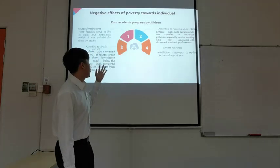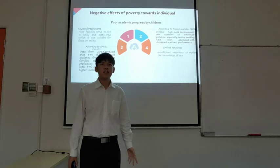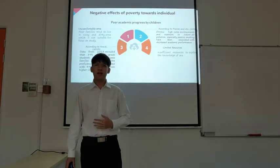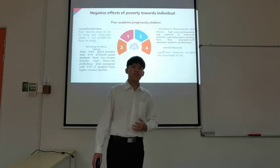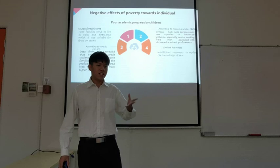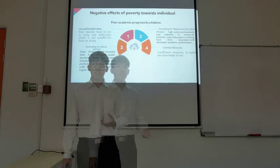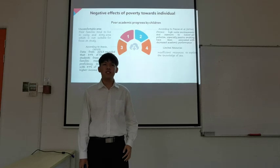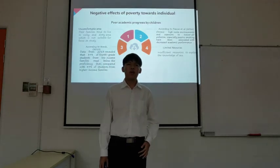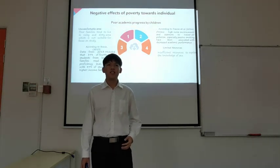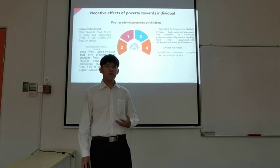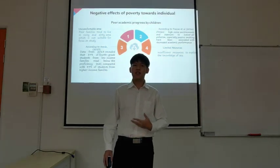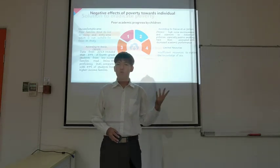The next point is the poor academic progress by children. The academic resources that can be provided to children by poor families are very limited. Data from a 2013 review shows that 89% of 4th-grade students from low-income families scored below the poverty level, compared with 49% of students from higher-income families. This data proves that poverty brings a negative impact on the academic progress of children. Next, I would like to pass to my friend to explain the solutions.